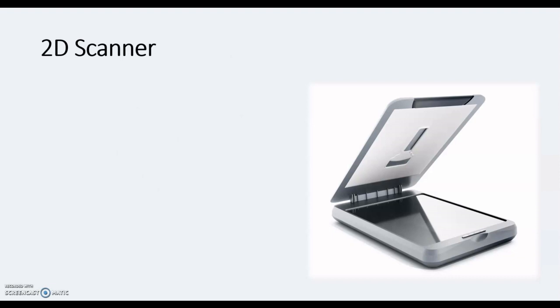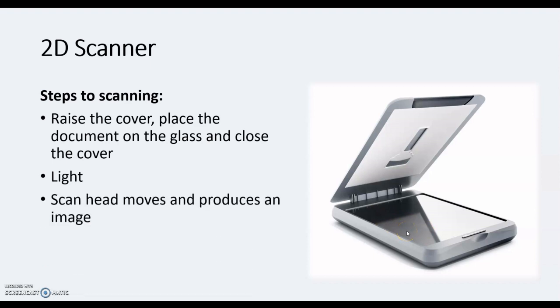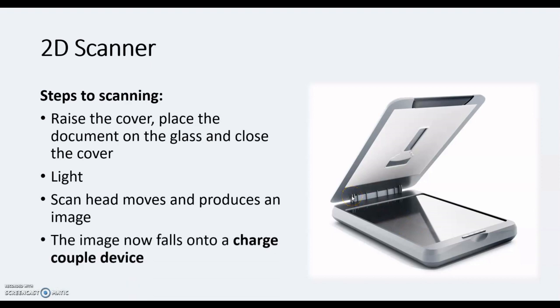There are two types of scanners. We're going to look firstly at the 2D scanner. Here are the steps to scanning — it's really simple. You raise the cover, place the document on the glass, then a white light will come over the glass where the scanner head will move and produce an image. That image will fall into a charge-coupled device, or CCD.